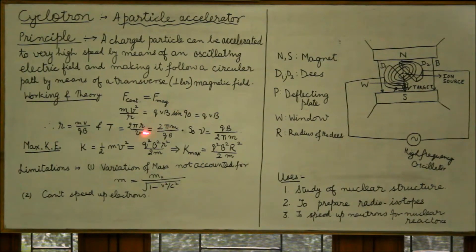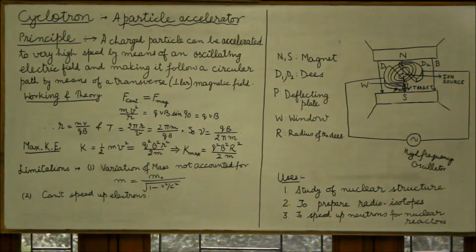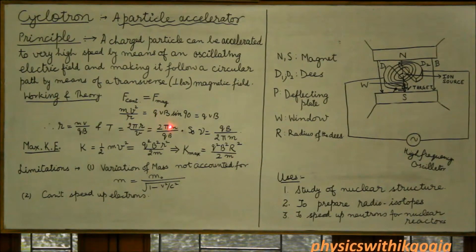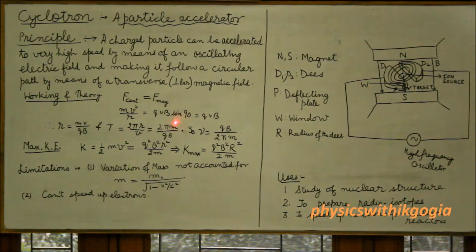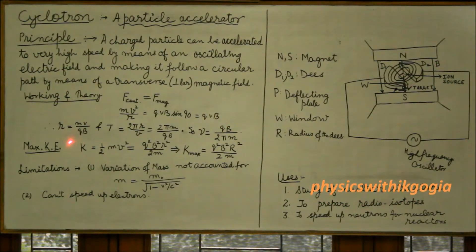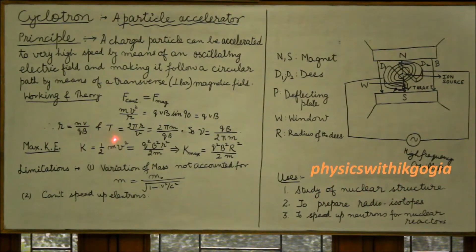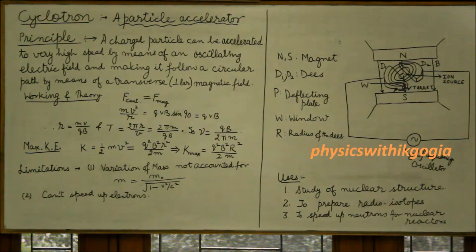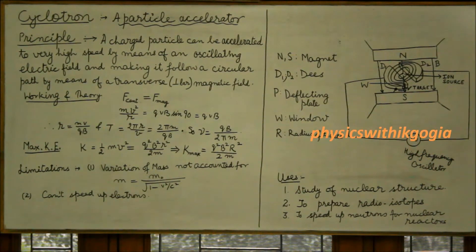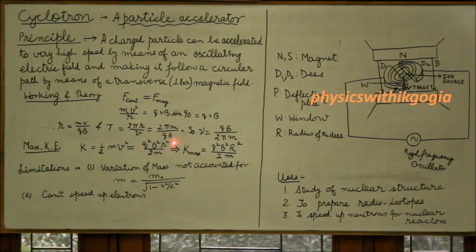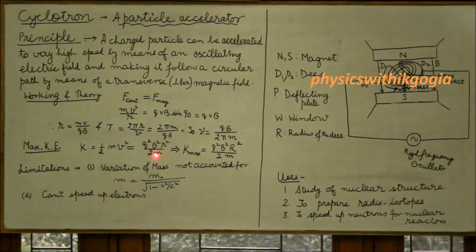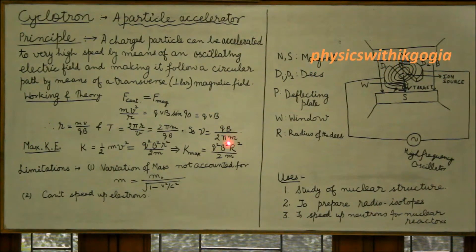The theory: the centripetal force required for circular motion is provided by the Lorentz magnetic force. So we have mv²/r = qvB sinθ. Here θ is 90° because the field is perpendicular to the motion of the charged particle, giving r = mv/qB. This leads to the time period for one revolution: T = 2πr/v = 2πm/qB. Therefore the frequency is f = 1/T = qB/2πm.